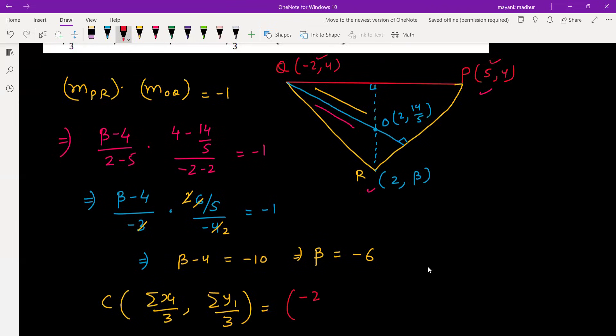Y-coordinates will be 4, 4, and beta, which we just got as negative 6, by 3. This will be 5 by 3 and 2 by 3, which is your c and d. We need the value of c plus 2d.